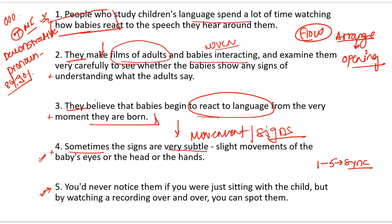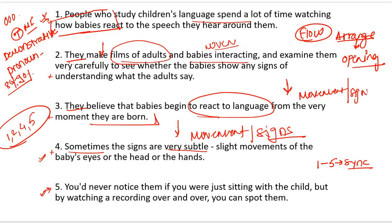If you look at number one, number two, number four, number five — all of these talk about how babies react. 'They believe that babies begin to react to language from the very moment they are born' — this is what they believe, this is their assumption, their belief. But numbers one, two, four, and five explicitly talk about baby movements. That is the reason your answer is three — three is your odd one out.